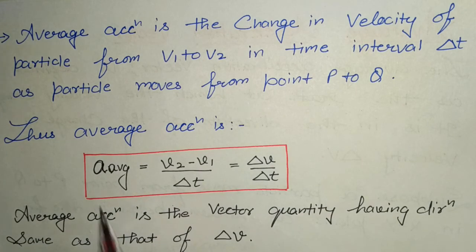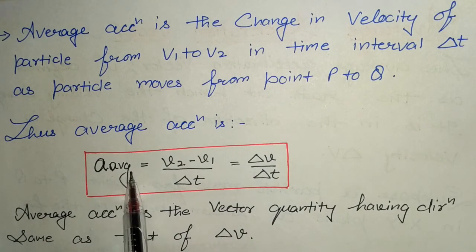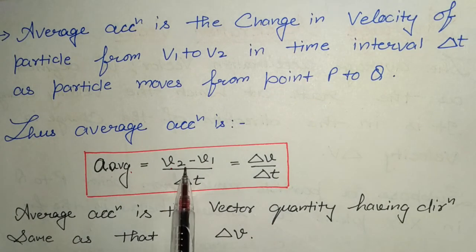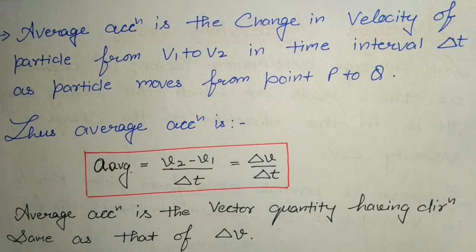If we know the velocities V1 and V2, we can calculate average acceleration from this formulation. Average acceleration A_avg equals the change in velocity — final velocity V2 minus initial velocity V1 — divided by the time interval delta T, which equals delta V over delta T. Average acceleration is a vector quantity having direction the same as that of delta V.